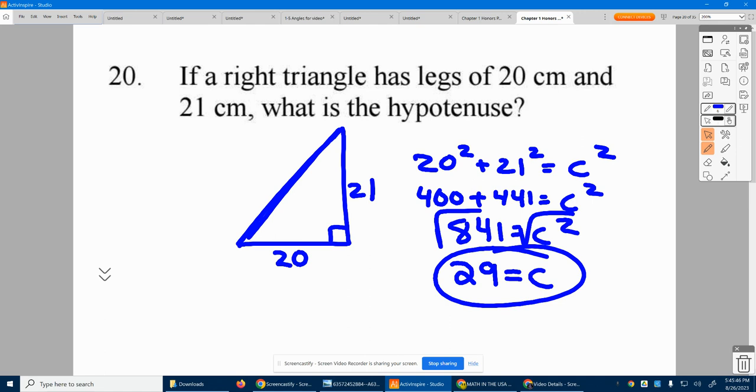This means it's not even rounded, it's a perfect 29. That means a 20, 21, 29 is a Pythagorean triple.